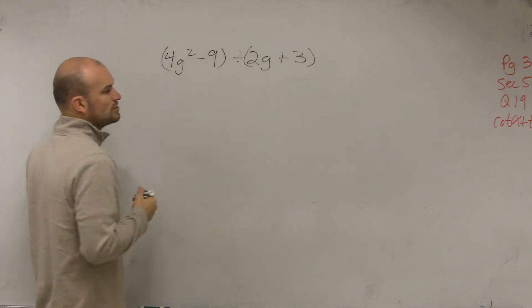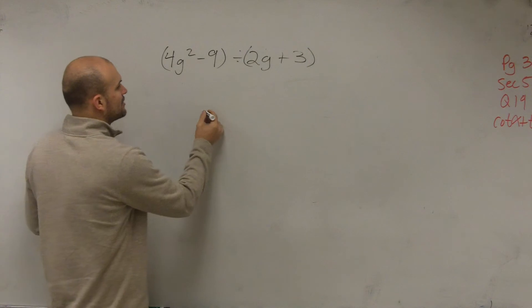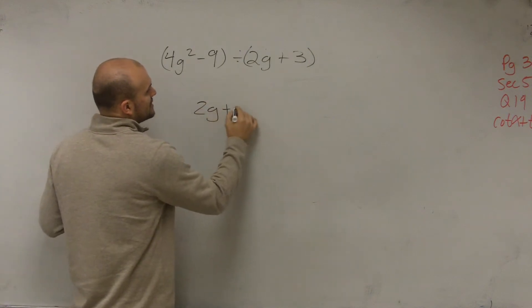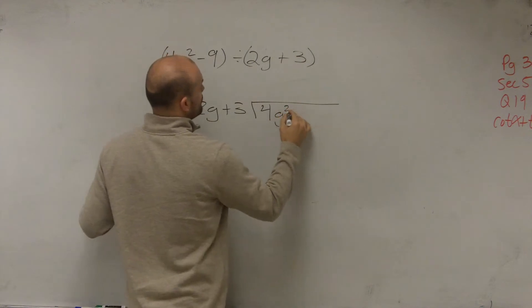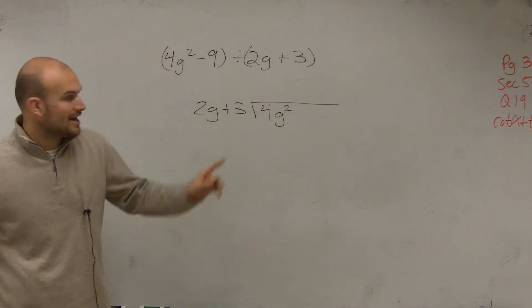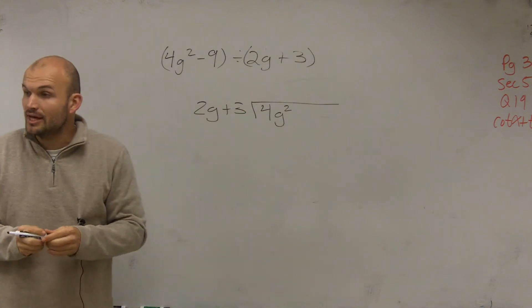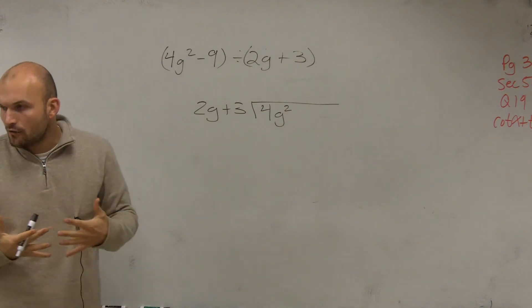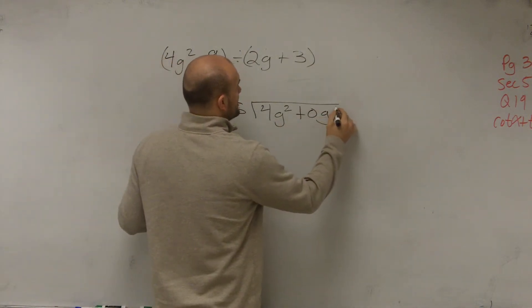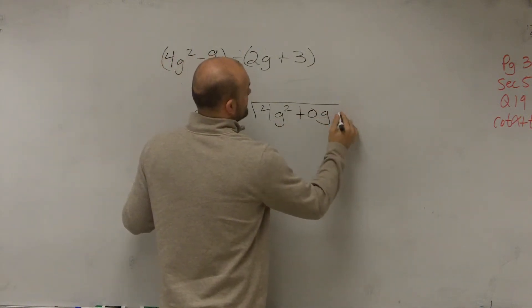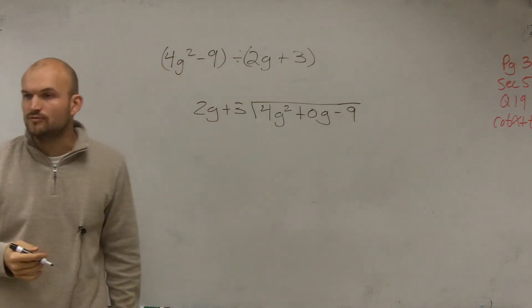Since you're taking 4g squared minus 9 divided by 2g plus 3, I'm going to write this as 2g plus 3 divided into 4g squared. Now I don't have a g term, right? I have a quadratic, but I don't have a linear term. I would like you to make sure you don't have to, but it's very helpful when learning long division to give yourself a place value of 0g minus 9. It's not necessary, but it's helpful.